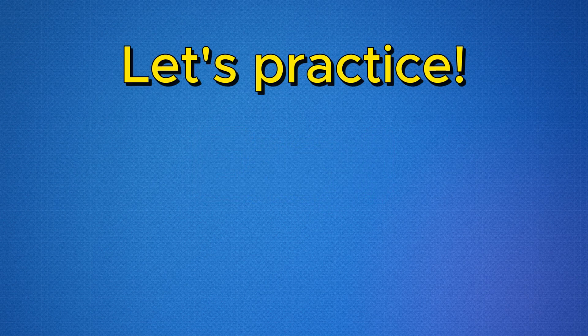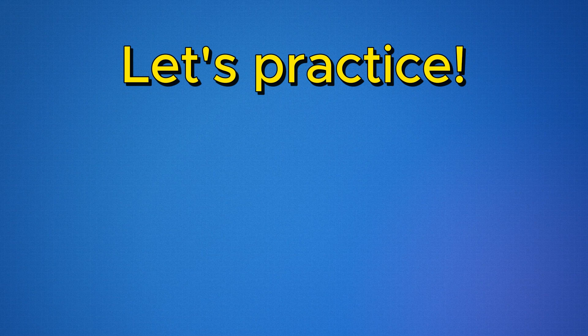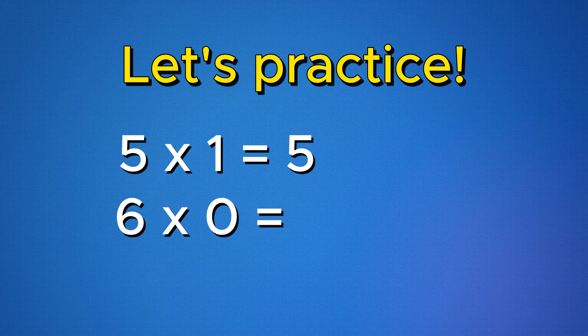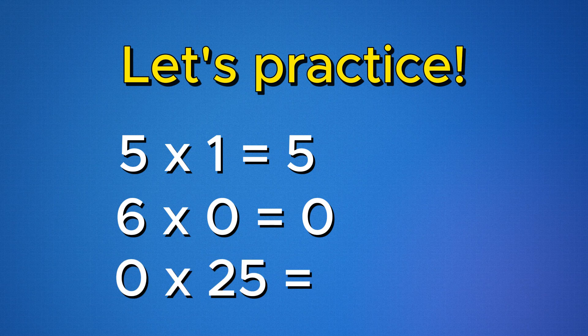Let's practice multiplying by zeros and ones together. What is five times one? Did you get five? Good job. What is six times zero? It's zero. How about zero times 25? If you said zero, then you get a gold star.